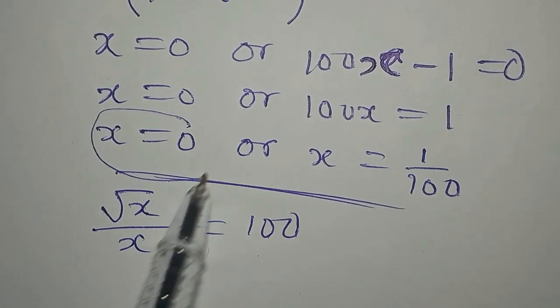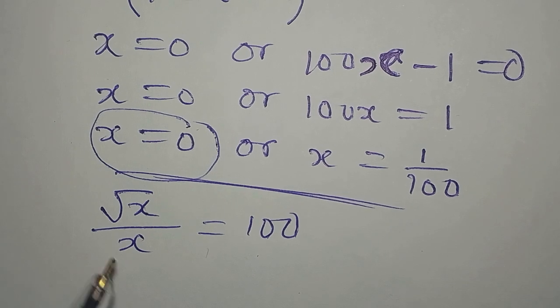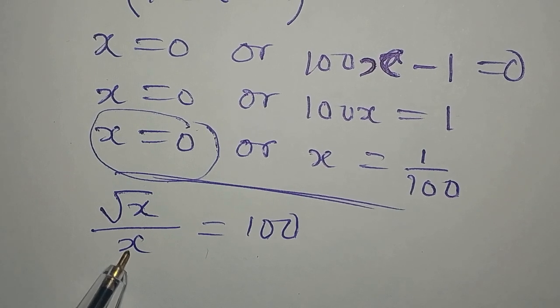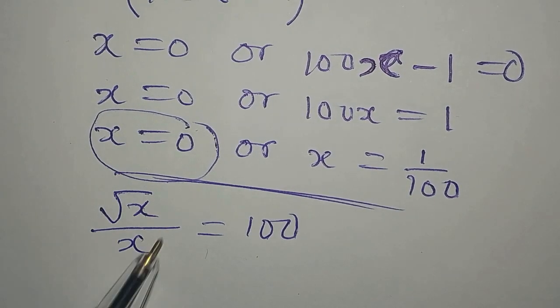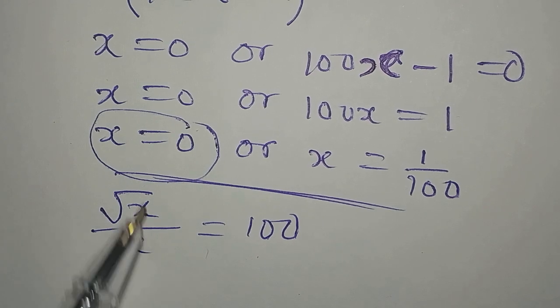It is obvious that this has to be rejected, because if you put x to be 0, it makes this to be undefined. So we have to reject this.